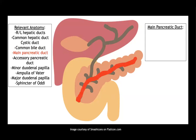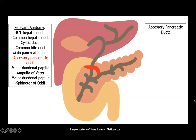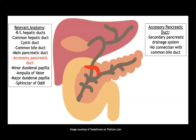Highlighted here is the main pancreatic duct, which is our primary pancreatic drainage. It connects with the common bile duct, and from that point on you'll have a combination of both bile and pancreatic enzymes flowing through this region. There's also an accessory pancreatic duct — a secondary drainage system not connected to the bile duct.